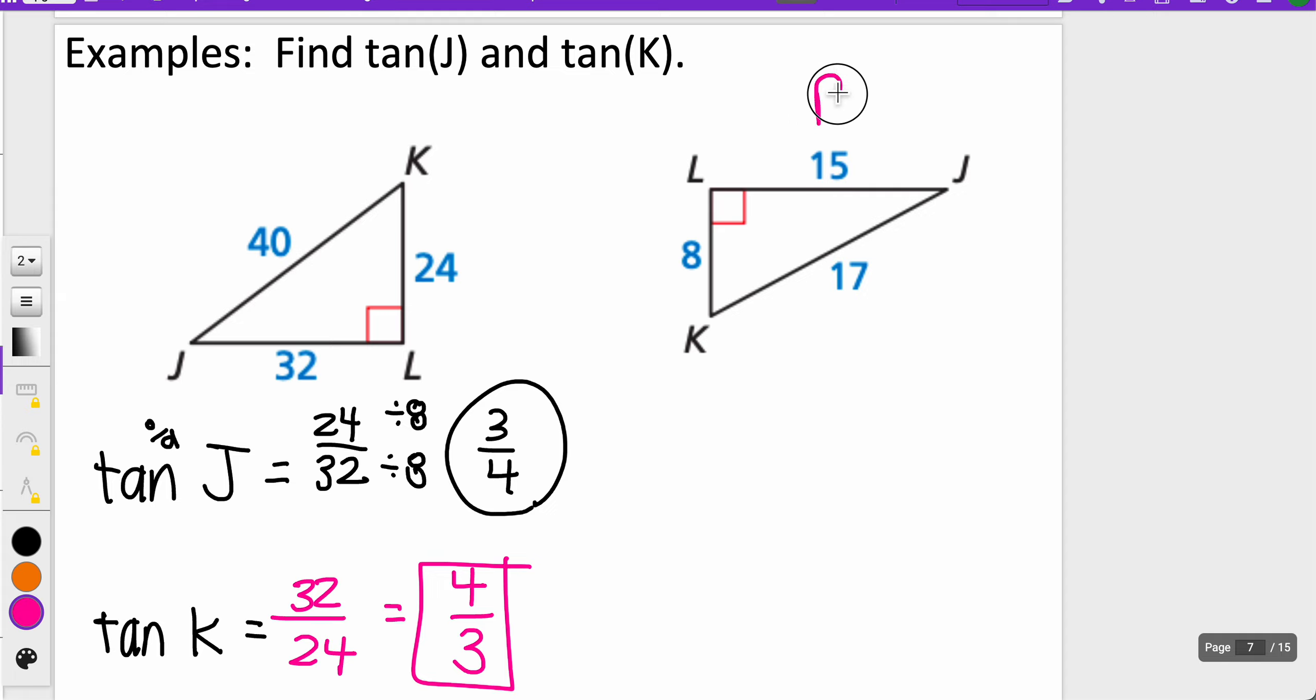On the next one, maybe you can try this. Go ahead and pause the video here. See what you can come out with for the tangent of J and the tangent of K. Click play when you're ready to check. So tangent of J, opposite is 8 and adjacent is 15. Can't simplify that anymore, so we can keep it as 8 over 15.